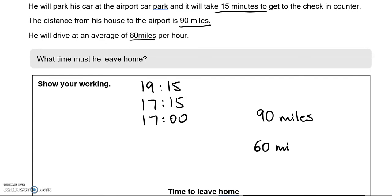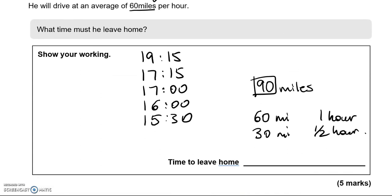And then the distance from his house to the airport is 90 miles. It's not 90 minutes, it's 90 miles. He will drive at an average speed of 60 miles per hour. So 60 miles will take one hour. 90 miles is 60 miles and 30 miles. So 30 miles will take half of that, which is half an hour. So in total, that journey from home will take one hour and a half. So if I take away one hour first from the 17:00, I'm left with 16:00. Take another half an hour, that is going to be 15:30. So we've included everything that needs to be included. Time to leave home: 15:30.